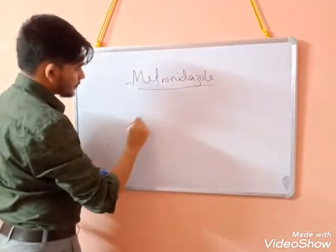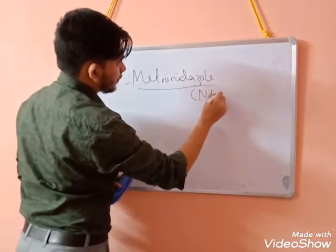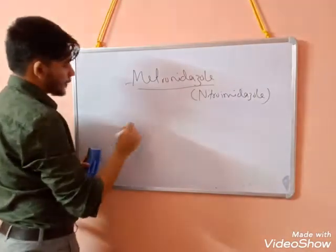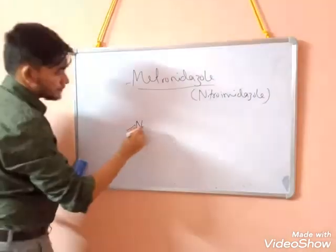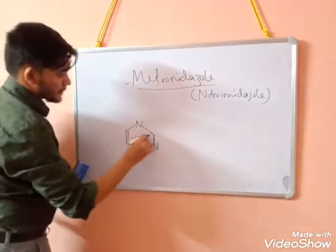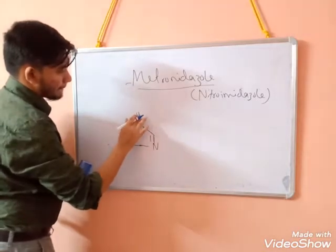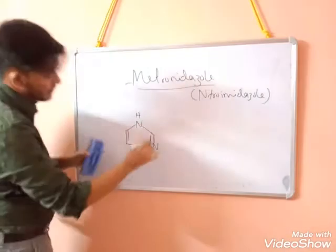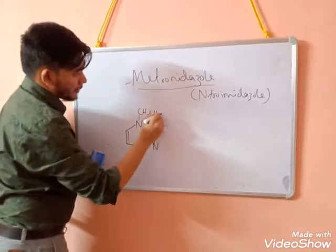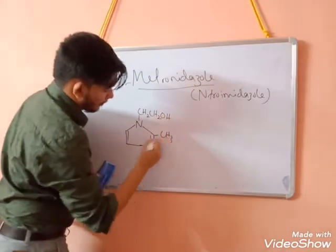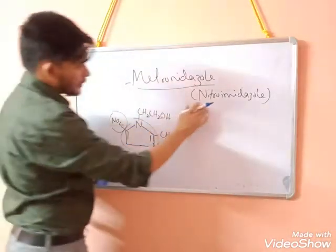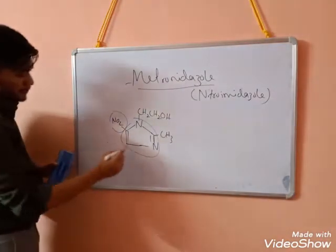Let me explain the structure of metronidazole. It is a nitroimidazole derivative — one nitro group is attached to the imidazole moiety. So this is the structure of metronidazole: this is the nitro group and this is the imidazole group, that's why it is called a nitroimidazole derivative.